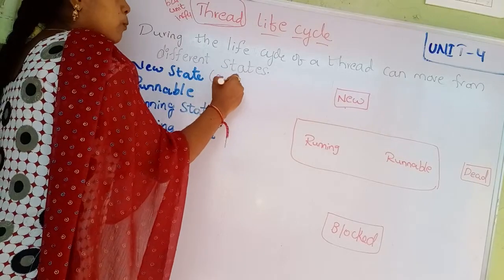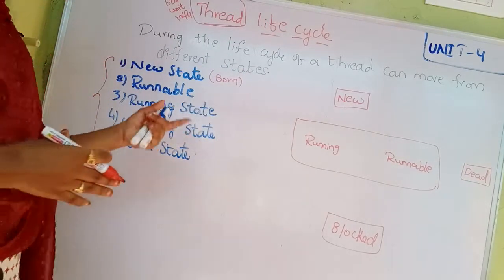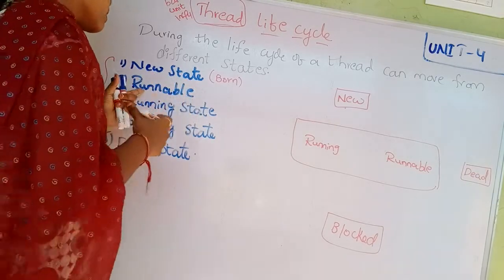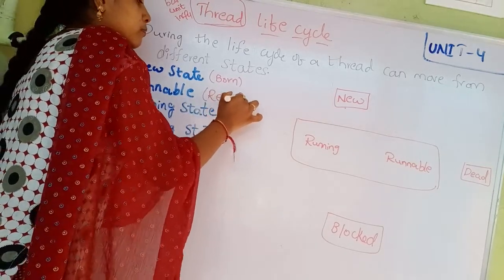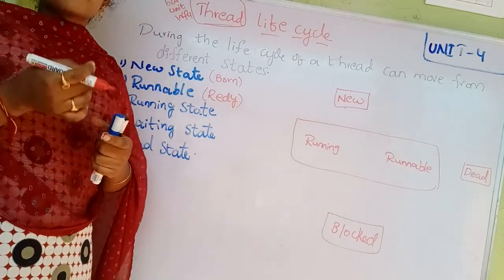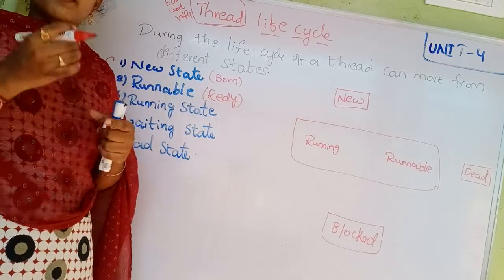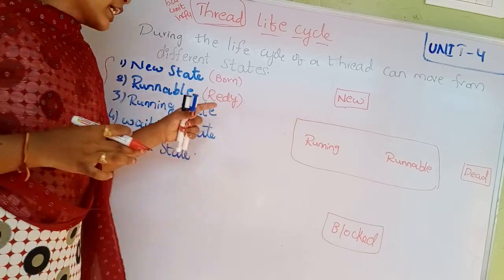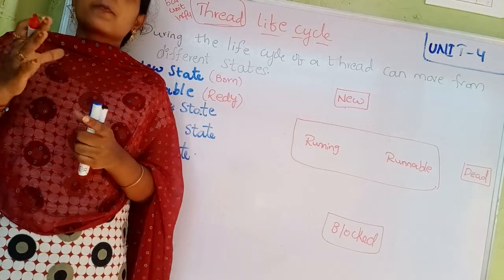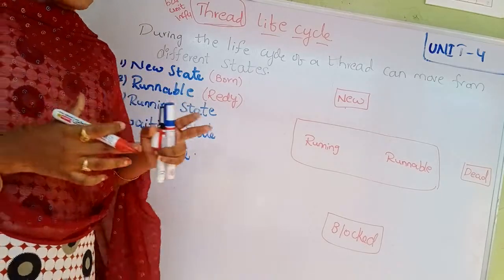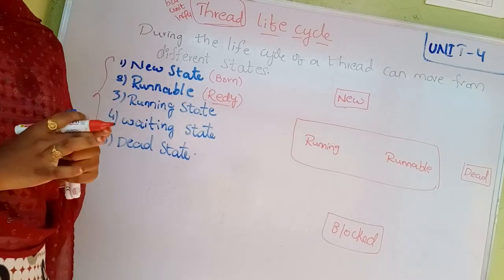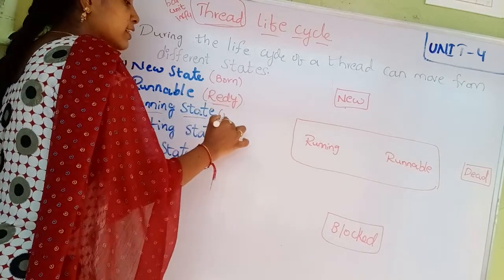New state means the thread's born state — the thread is created. Runnable state means ready state: the thread is ready for execution, but the processor is waiting. So the thread is ready but waiting for the processor to be available before moving to the runnable step.